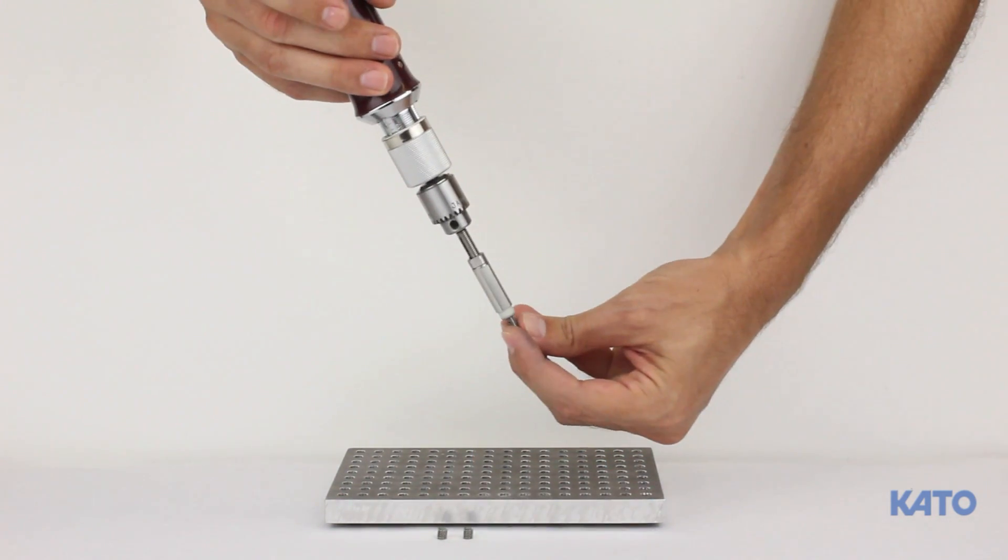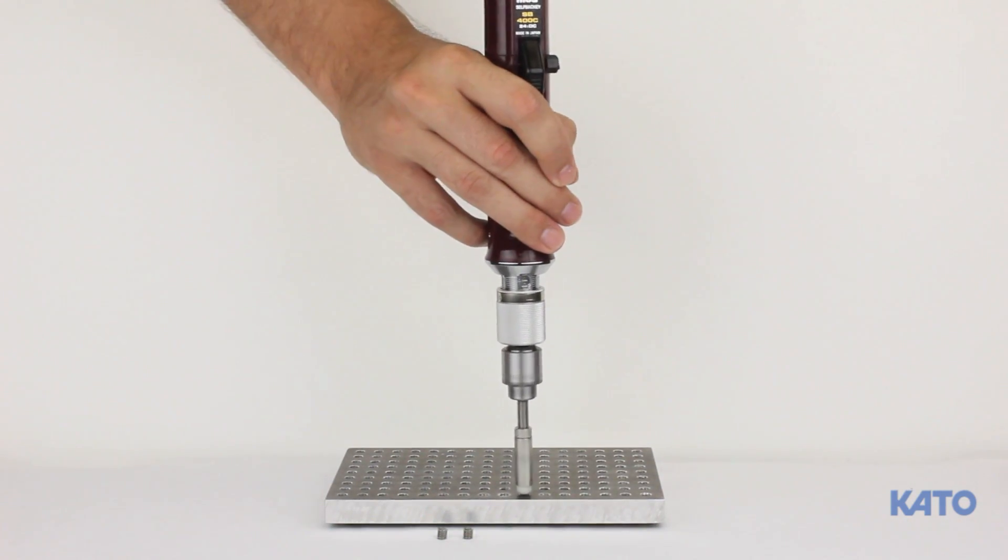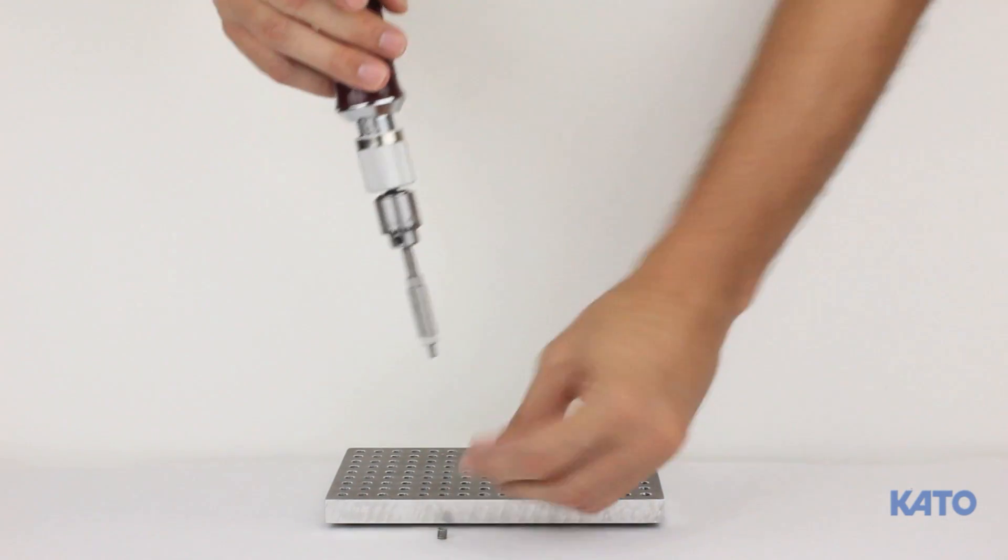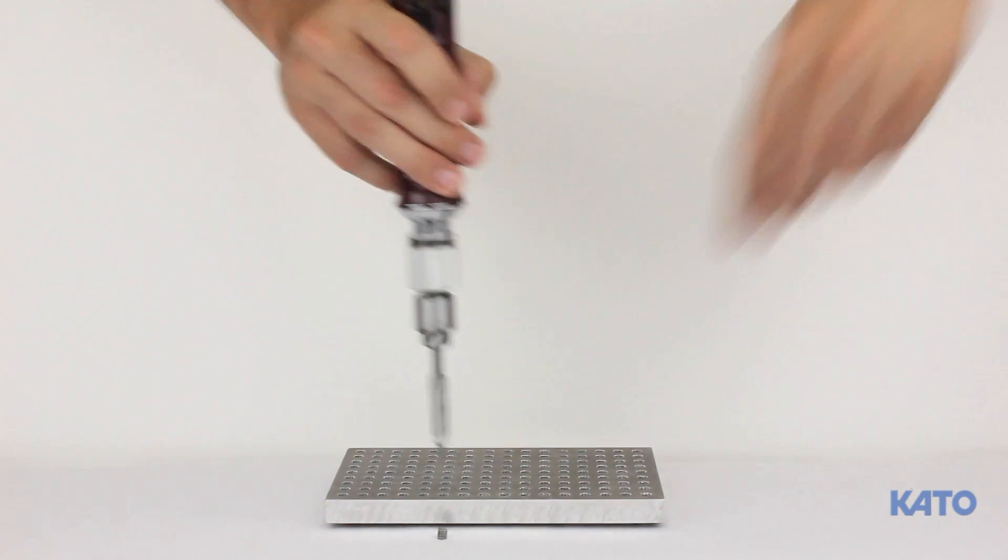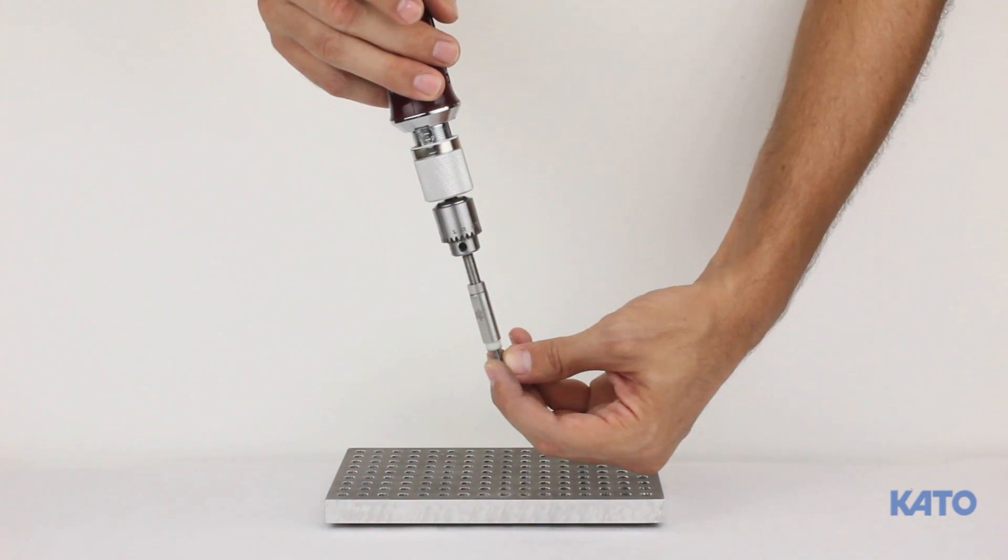As you can see, the Kato Round Electric Tool is fast, clean, quiet, easy to set up, and easy to use. It's ideal for medium to high volume users.